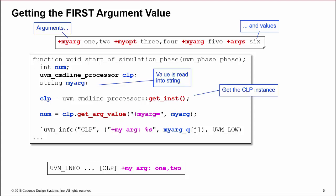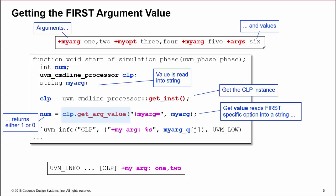Once we have the CLP instance, we can call getArgValue to read the first plus myArg option into a string. The method returns either 1 or 0, depending if an argument is found.